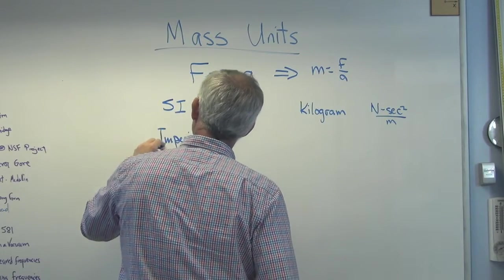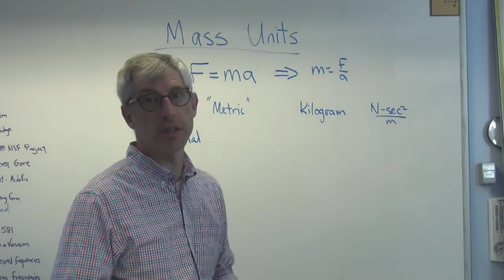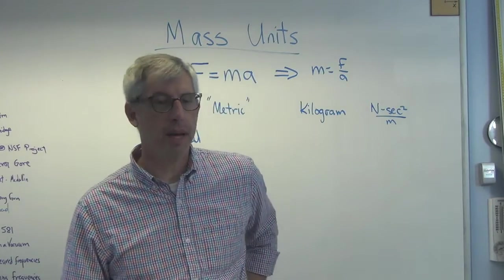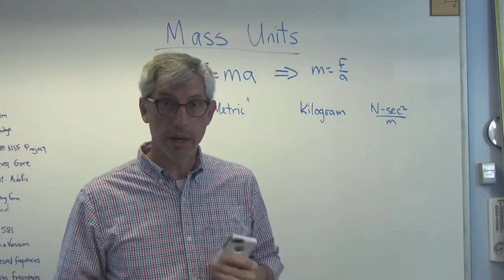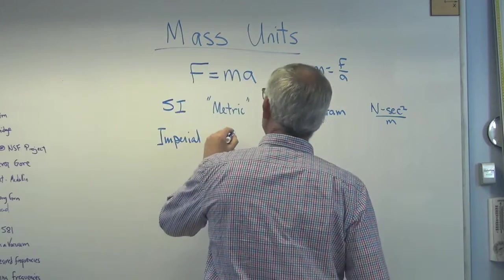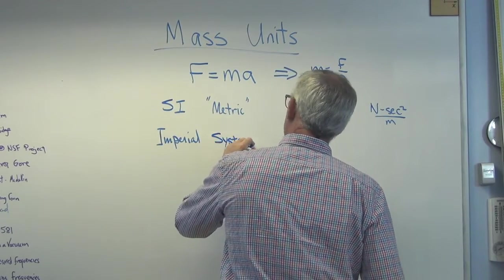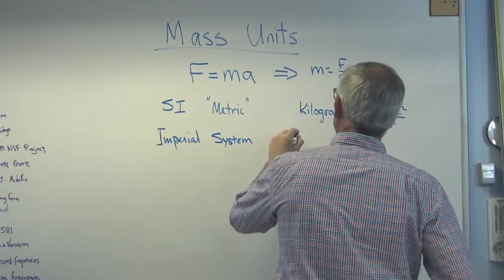This is imperial. And I actually checked online, and it was also called the British gravitational system. I hadn't heard about that, but I have the Googles in my pocket, so I was able to check it out. So the imperial system obviously came out of England. This is the slug.